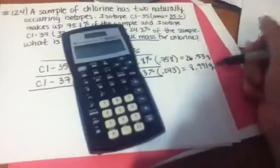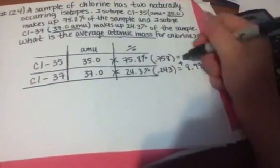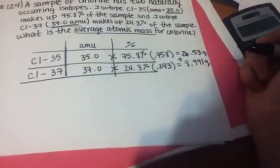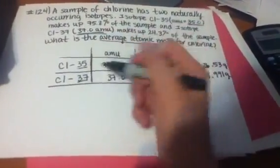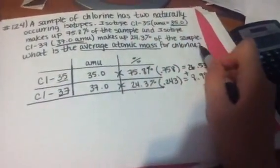So now I have two different masses. Because I'm trying to find the average, I'm also going to add these two different masses. Because even though they're different isotopes, it's still for chlorine, and we're trying to find the average atomic mass for chlorine.